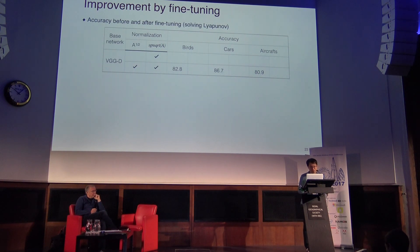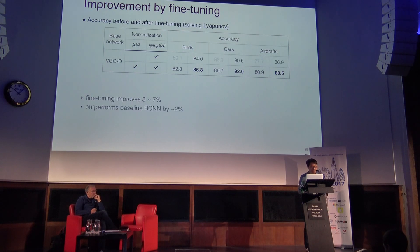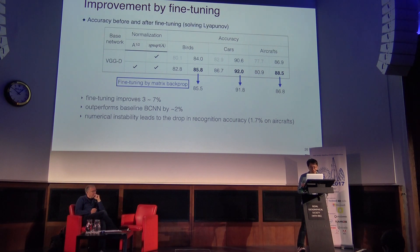The table reports accuracy before and after fine-tuning. By fine-tuning with the matrix square root using the Lyapunov equation, we improve the model by 3–7% accuracy. Comparing to the fine-tuned original bilinear CNN method, our current approach improves by about 2%. We also tried fine-tuning the matrix square root using matrix back-propagation: on the bird and car datasets the accuracy drop is negligible, but on aircraft it drops by 1.7%, suggesting that numerical instability in the gradient could lead to a drop in recognition accuracy.